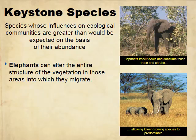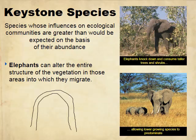Next we have keystone species. When you're thinking of keystone species, think of an arch built with stones — the keystone from art history is the stone right at the top. If you pull it out, the whole thing collapses. That's the theory behind a keystone species.